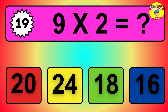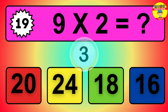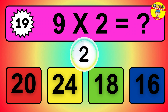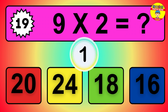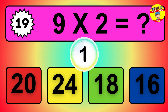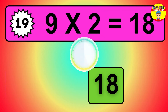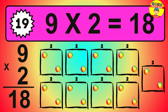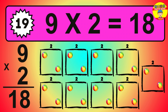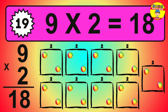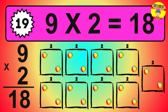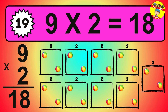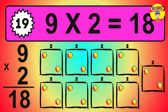Question 19. 9 times 2 equals what? The answer is 9 times 2 is 18. To calculate, we have 9 groups with 2 balls each one. So how many balls do we have? 18 balls.